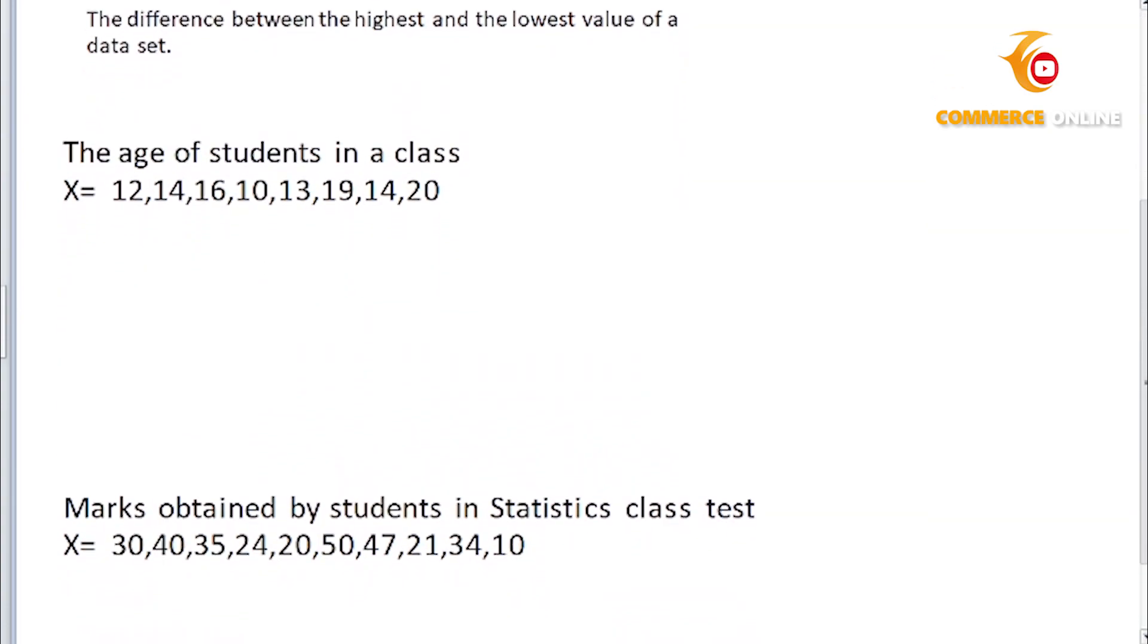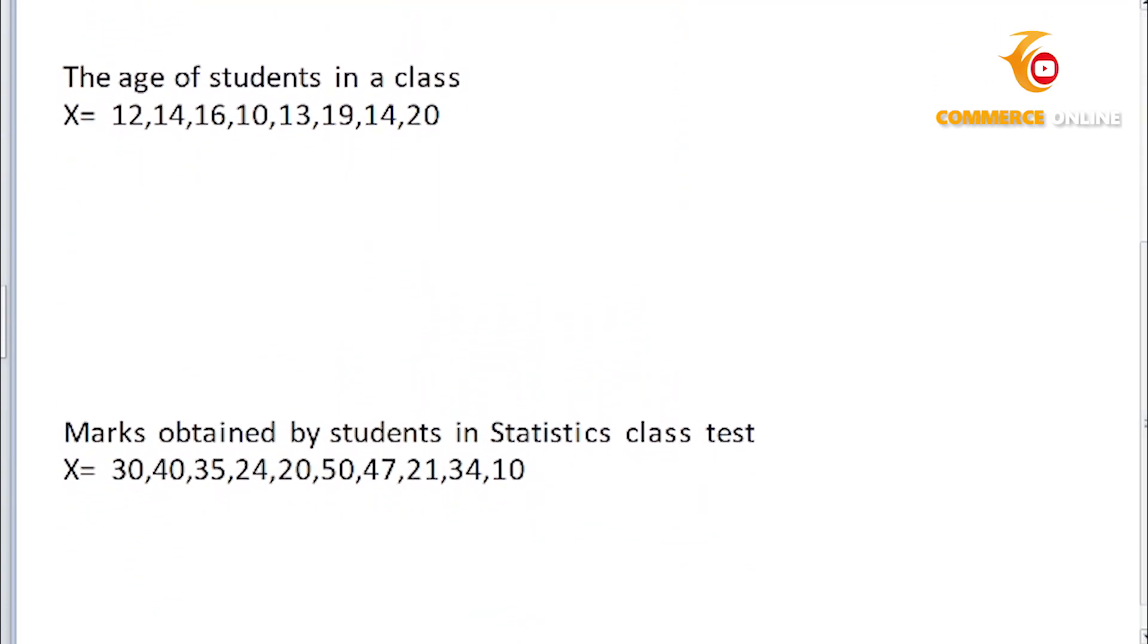Let's solve and see. We have data here. The problem says: the age of students in a class, X equals 12, 14, 16, 10, 13, 19, 14, and 20. Now look at this data.